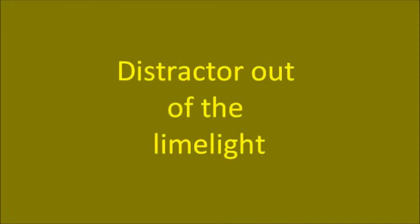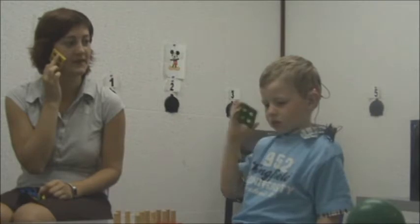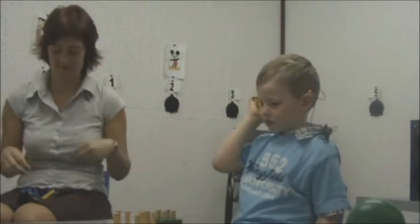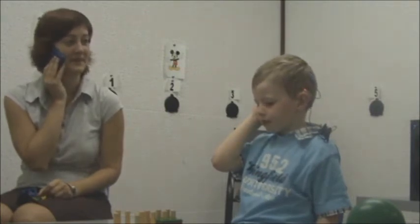When testing children, the distractor tries to maintain the response behaviour established during the conditioning procedure. In most cases, the typically enlarged, somewhat exaggerated behaviour during conditioning of the distractor can get back to normal proportions. The distractor takes a back seat and only steps into the limelight when necessary.